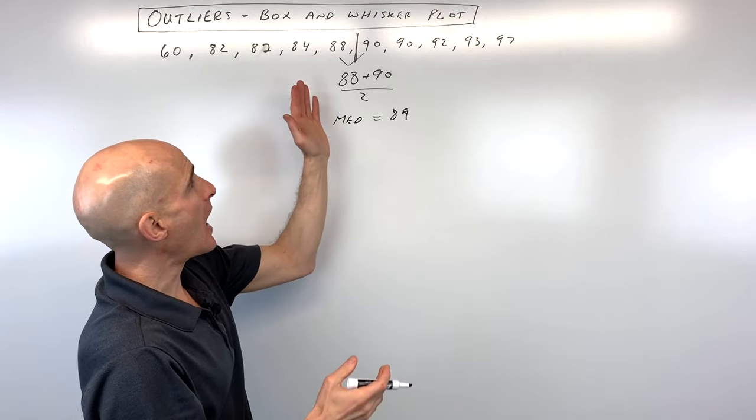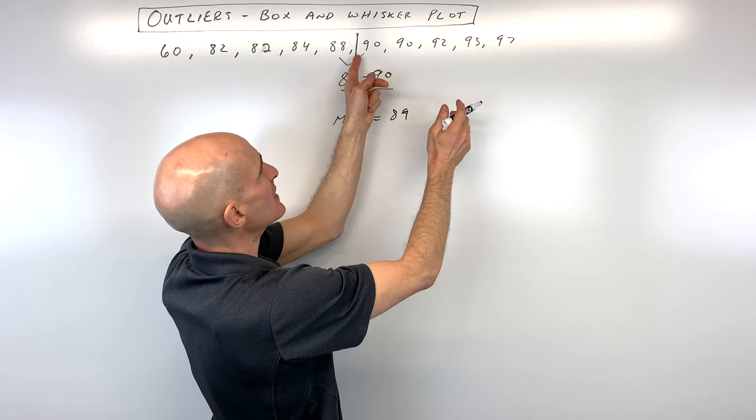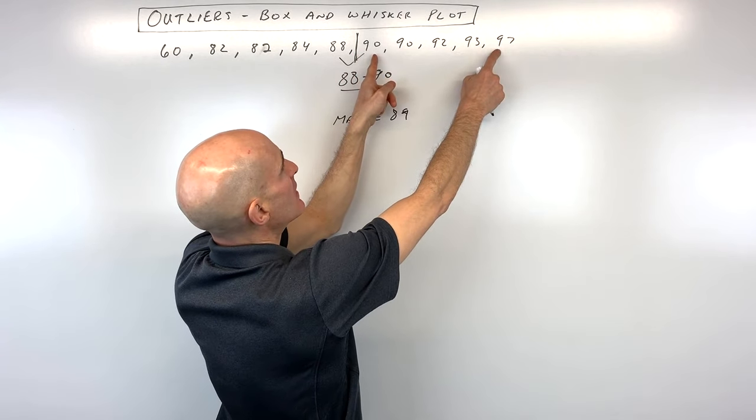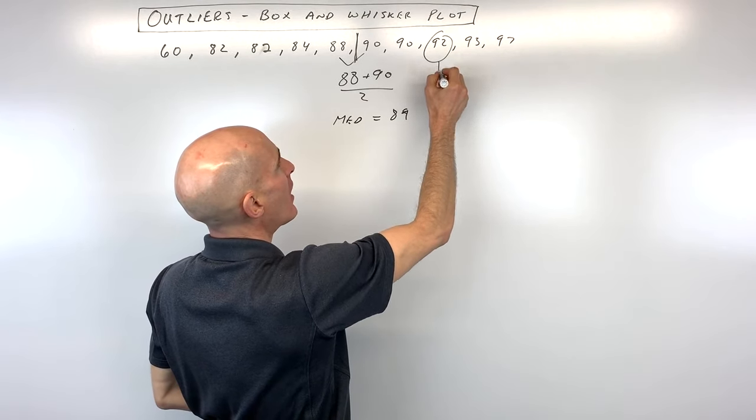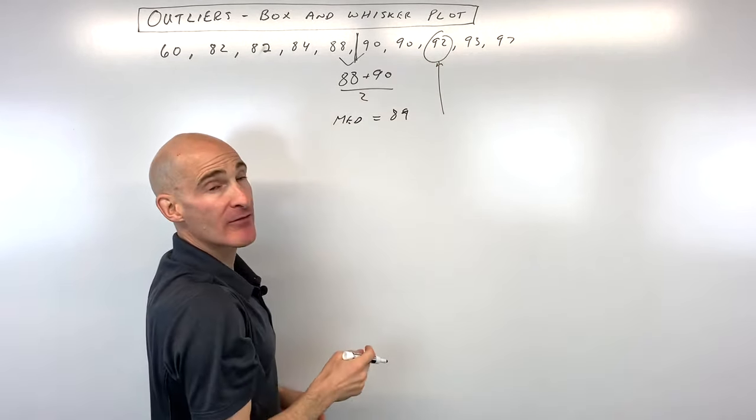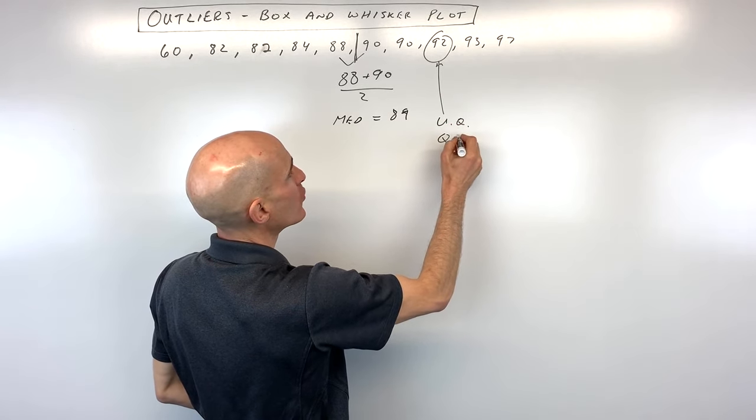So then what you do is you take the upper half of the data and you find the middle number. So you don't want to count the median, but just to the right of that. So we have 1 and 1, 2 and 2. You can see 92 right here is going to be the middle of the upper half of the data. We call this our upper quartile, or you can call this quartile 3.